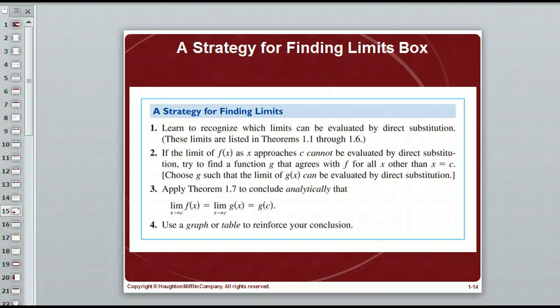So, this box summarizes finding limits. What you'll try to do is, first of all, you try to do direct substitution. That's always the easiest way. If you get zero over zero, though, then you try to find a function that agrees with f at all the points. That's pretty much factoring and canceling or the rationalization technique. Since they agree in all the places, f and g agree everywhere except for in one place. That still means that the limits would be the same. Then, use a graph or table to reinforce your conclusions.